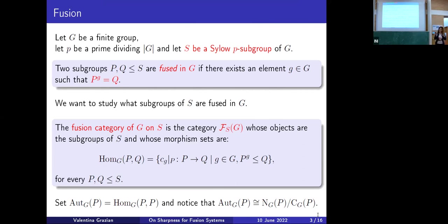So this last observation says that a way to study the p-local subgroups — the normalizer and centralizer of P — is to study this group Hom_G(P,P), in other words to study the fusion category of G on S. I'm going to show you a quick example that will clarify things.